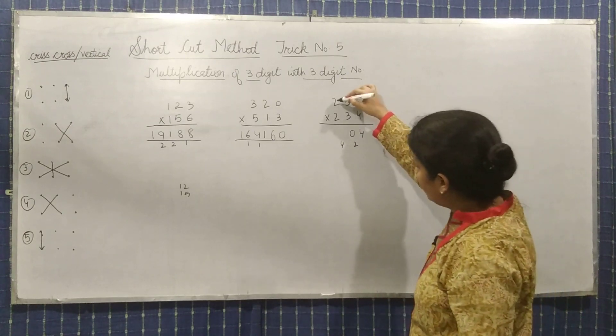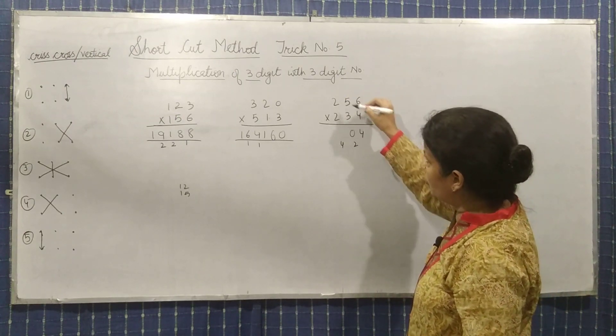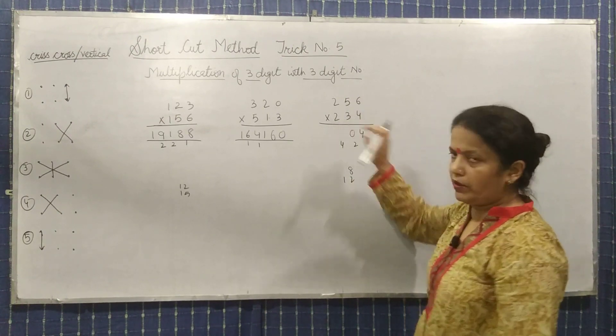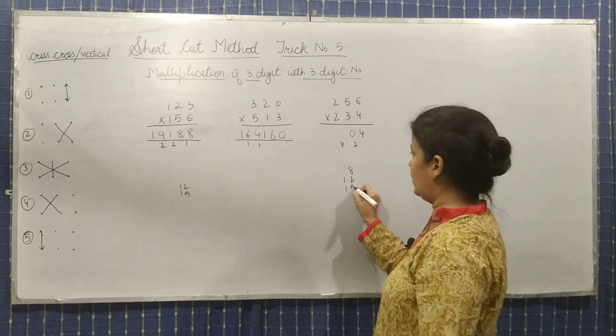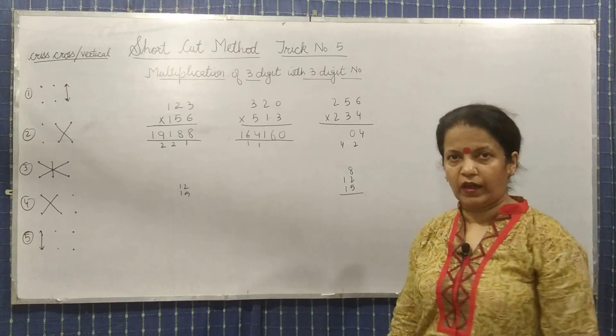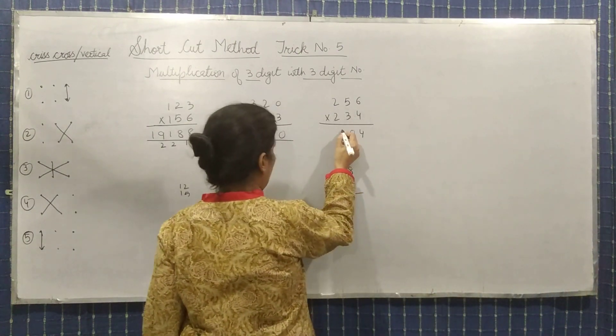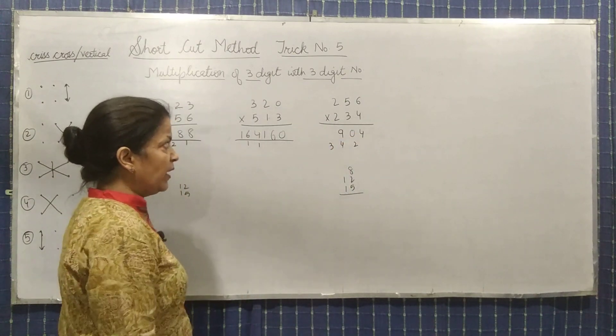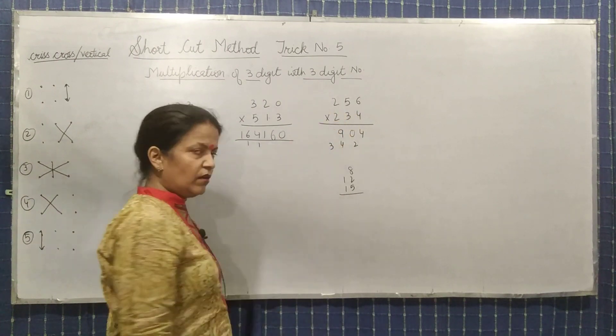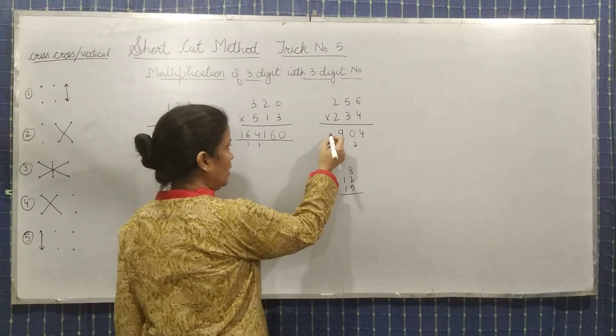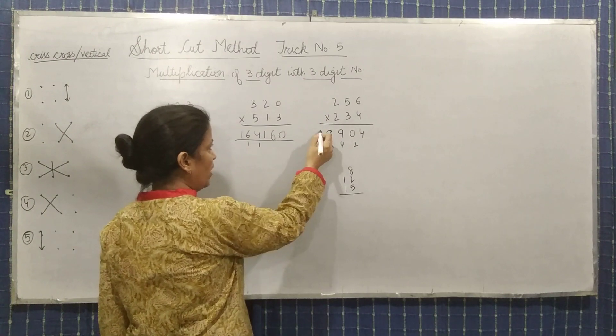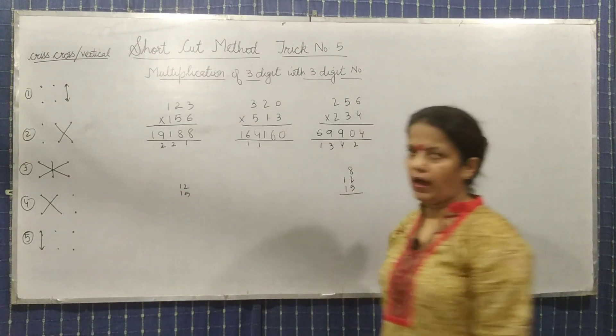Now what will we do? Extreme cross. Two into four is eight, two into six is twelve, and five into three is fifteen. So it will be how much? See: ten, fifteen, thirty-five, plus four is thirty-nine, three carry. Now what will you do? Multiply these two: ten plus six is sixteen plus three is nineteen, one carry. Now multiply these two: four plus one is five. So this is the answer.